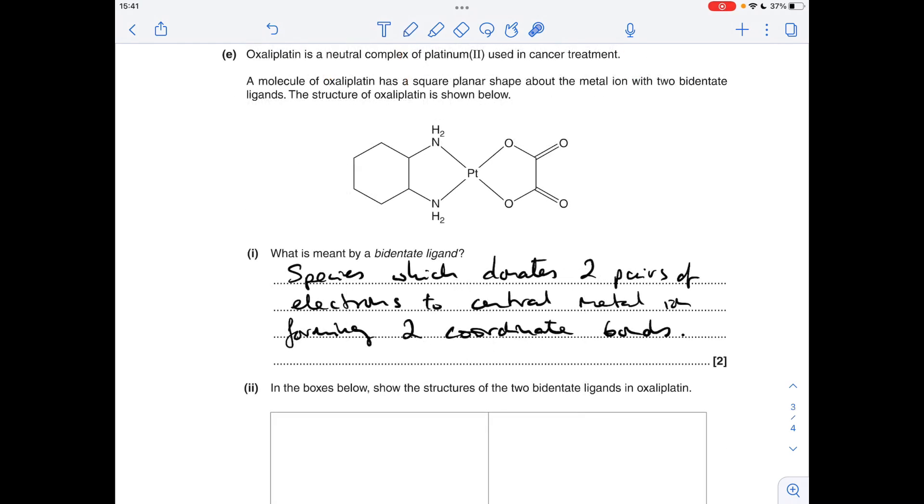First part of E, what's meant by bidentate ligand? So a bidentate ligand is a species which donates two pairs of electrons to a central metal ion and it forms two coordinate bonds or two dative covalent bonds in the process. So if we apply that to this complex here, we've got to show the structures of the two bidentate ligands in this oxaliplatin.